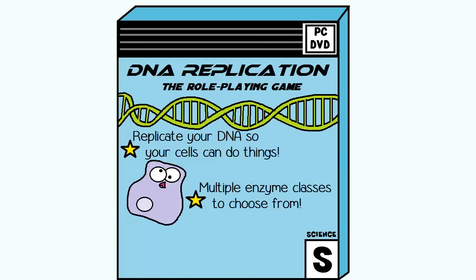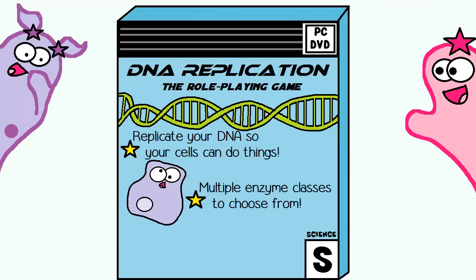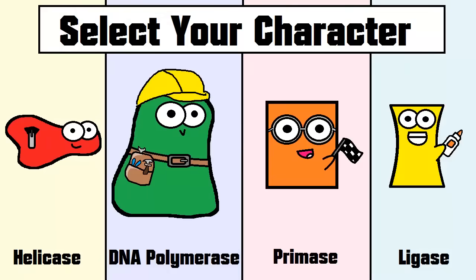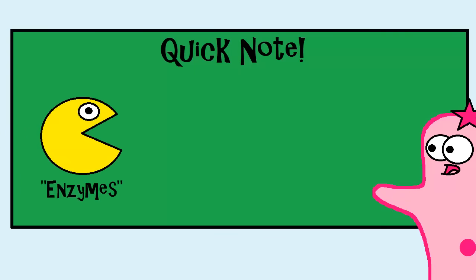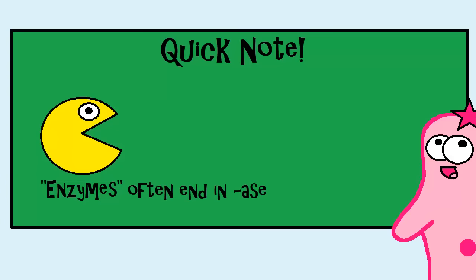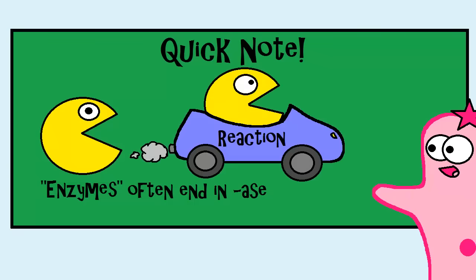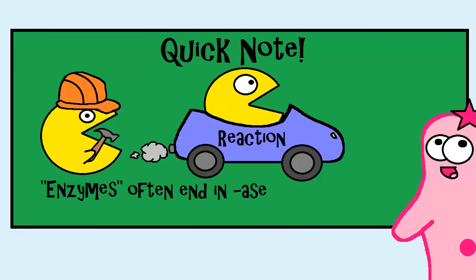I think DNA replication would actually make a great video game — it's actually quite exciting. I'm going to introduce the key players in DNA replication so you can get some background information. The majority of these key players are enzymes. In biology, when you see something end in -ase, it's very possible that it may be an enzyme. Enzymes have the ability to speed up reactions and build up or break down the items that they act on.